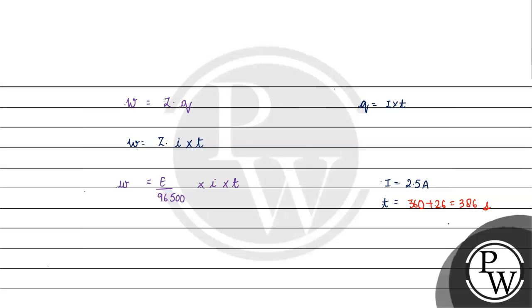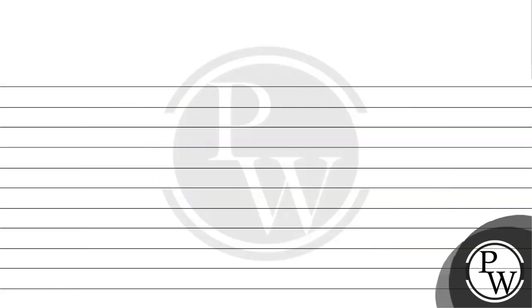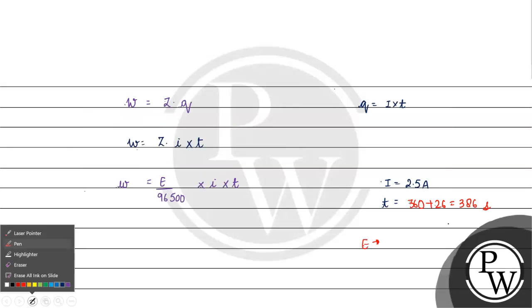Now, how much is E? What is the reaction happening? We have copper 2 plus ions forming copper. Equivalent weight is molecular weight divided by the N factor. Here, the number of electrons involved is the N factor, and how many electrons are involved? 2. So equivalent weight will be 63.5 by 2.